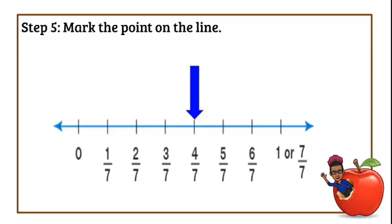5 sevenths, 6 sevenths, and we got to 1, which in fact would also be 7 sevenths. It's still the whole. So that is how we plot fractions on a number line.